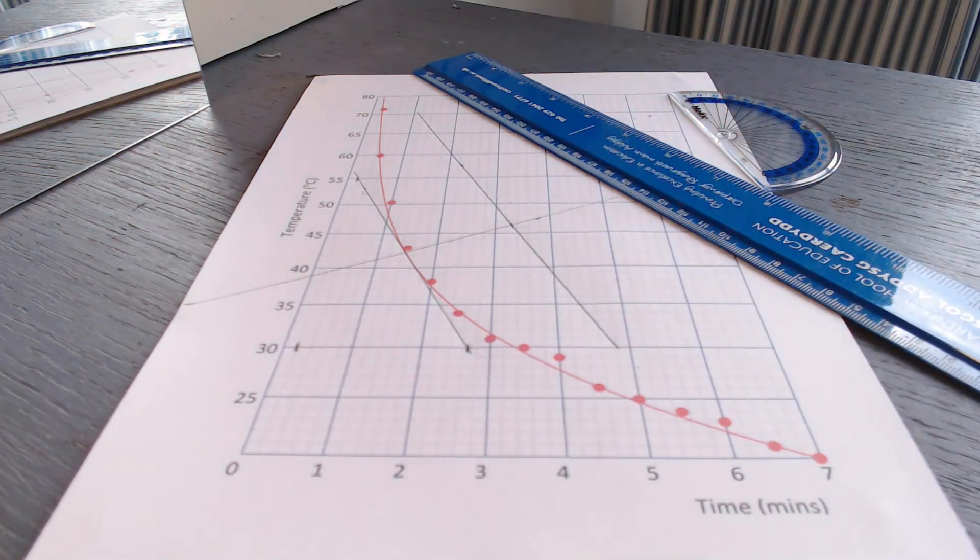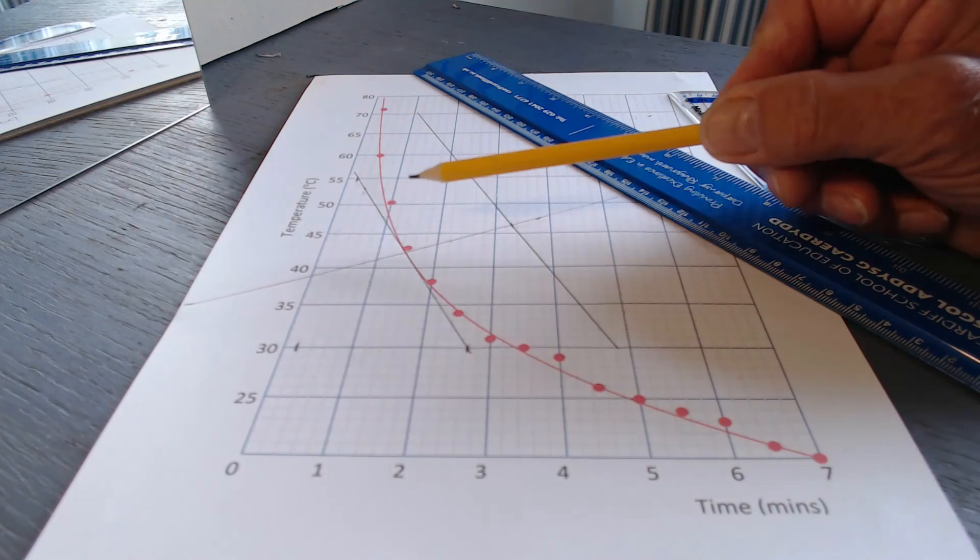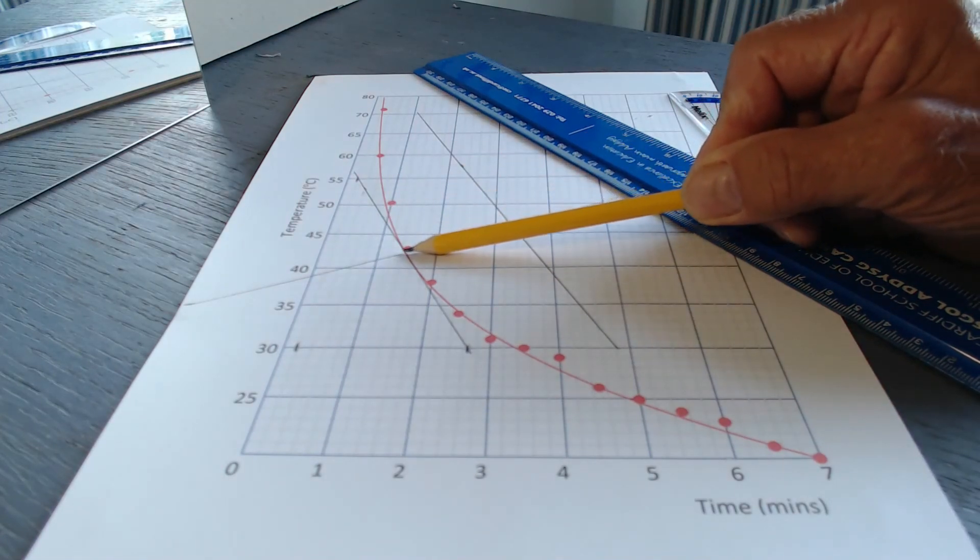So, well, that's surprising. 25 divided by 2.5. The gradient then is 10. Believe me, that's pure chance. So the gradient of this curve at this point is 10.